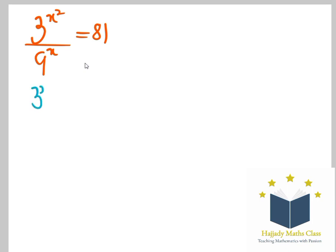we have that 3 raised to power x raised to power 2 over 9 is the same thing as 3 raised to power 2x. Also, 81 is the same thing as 3 multiplied by 3 multiplied by 3 multiplied by 3, which is equivalent to 3 raised to power 4.